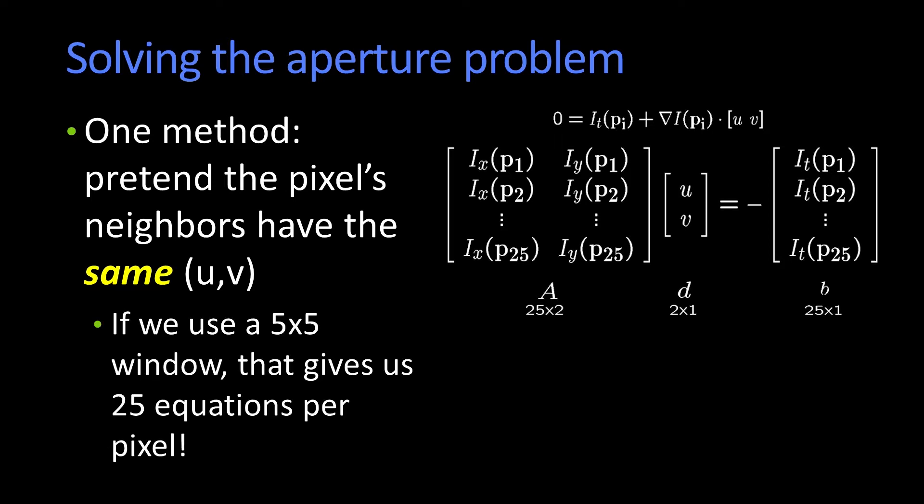So if we were using, let's say, a five by five window, so there's 25 pixels. If we were assuming that there was one UV for all of these, the UV for the center pixel, that would give us 25 equations per pixel.